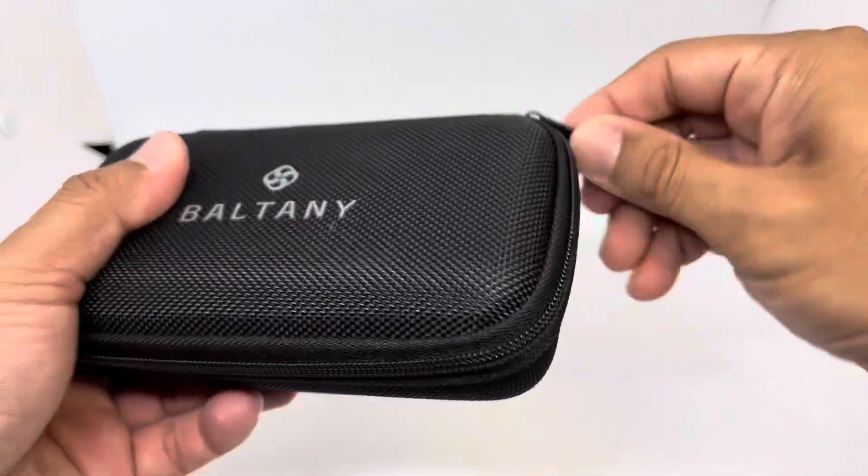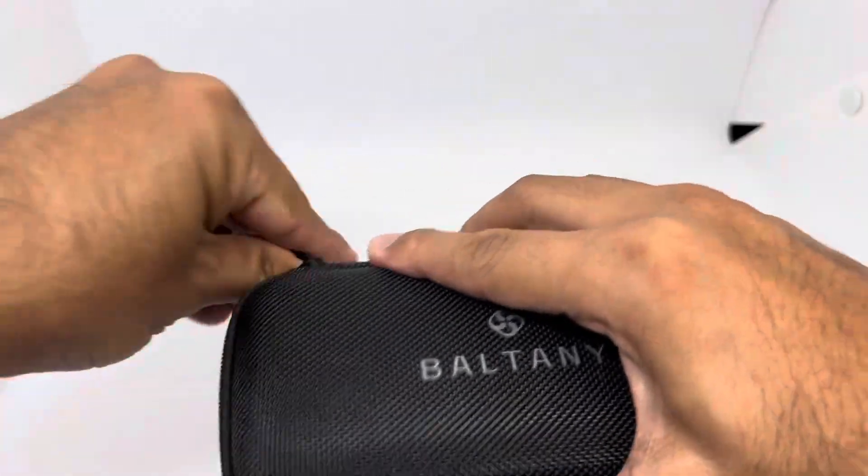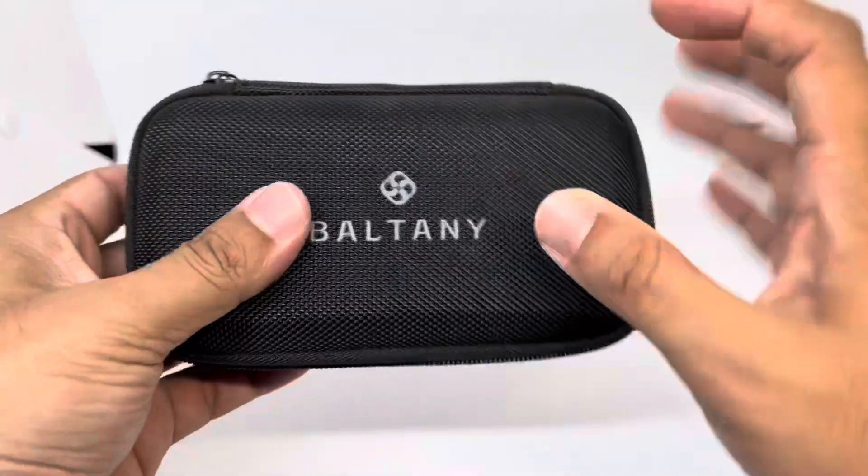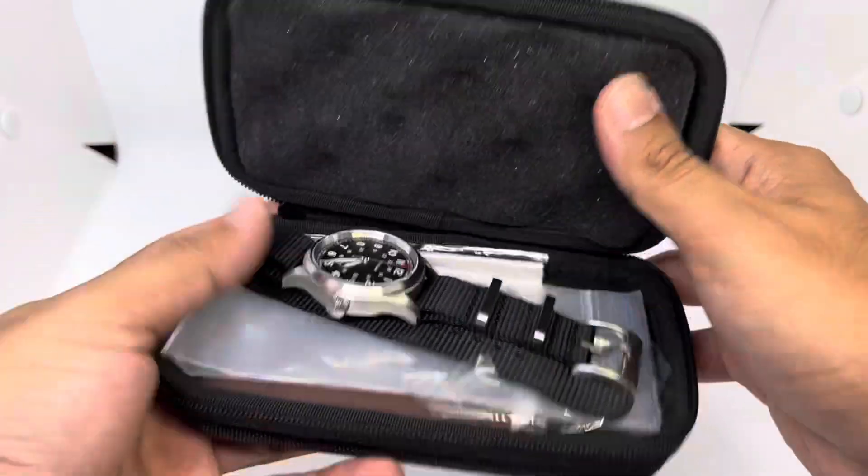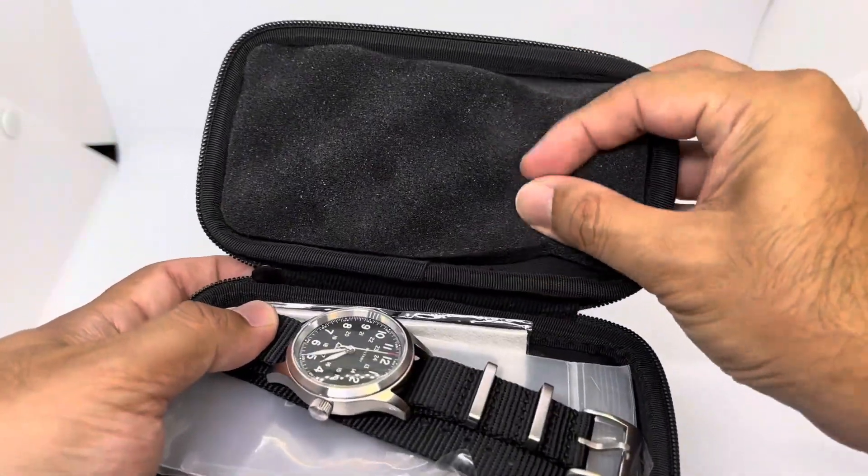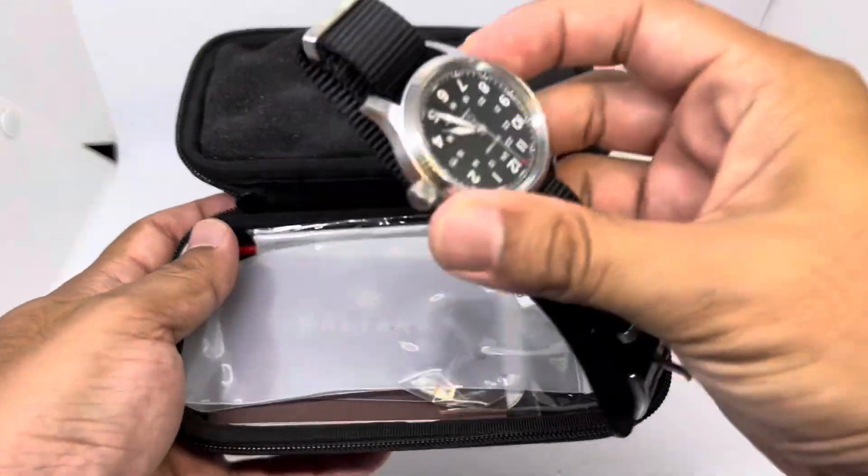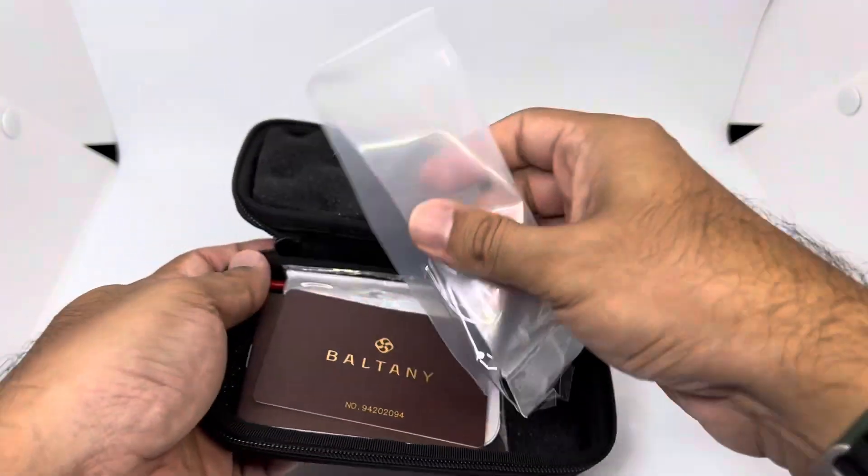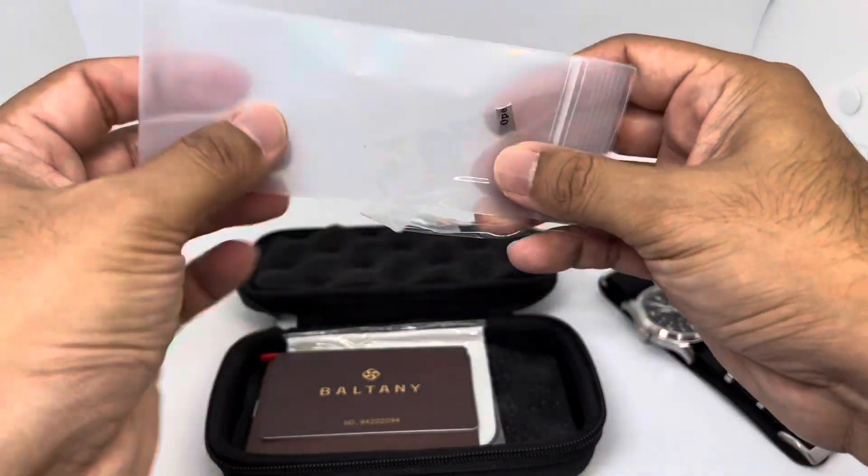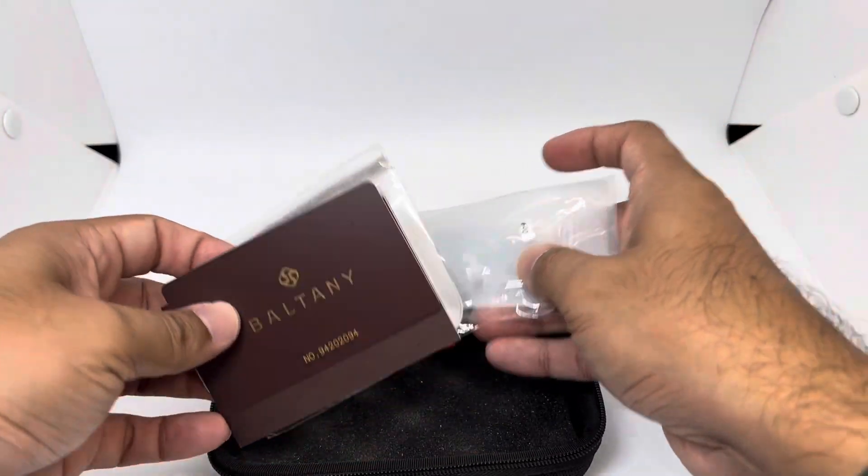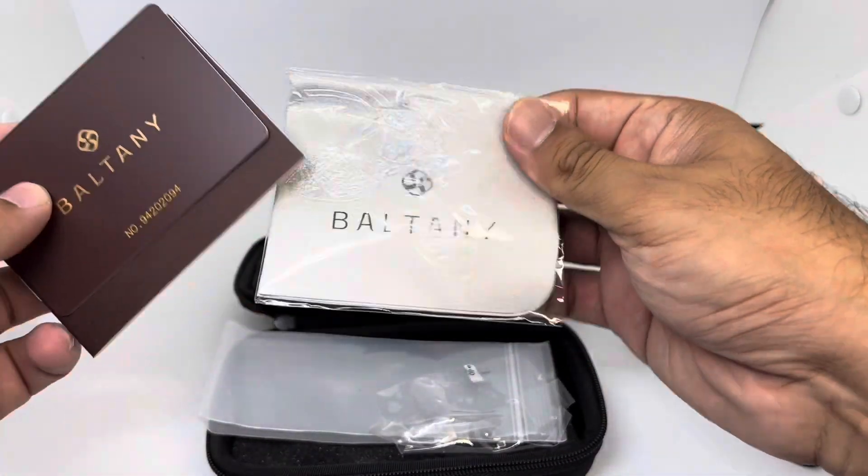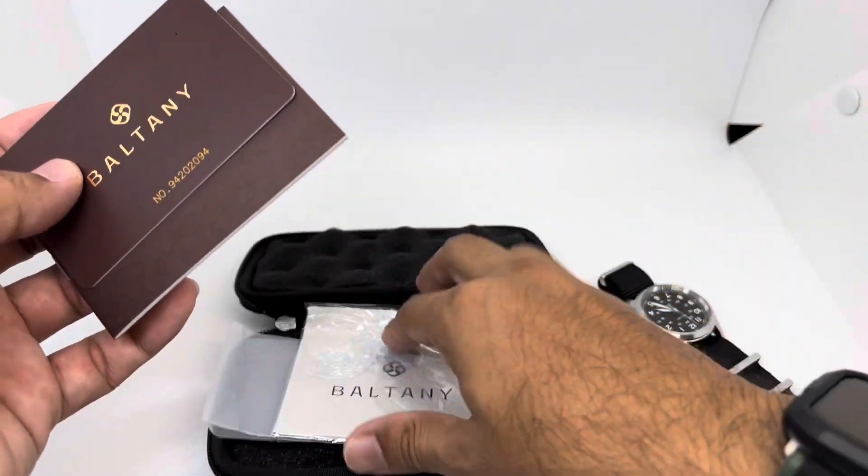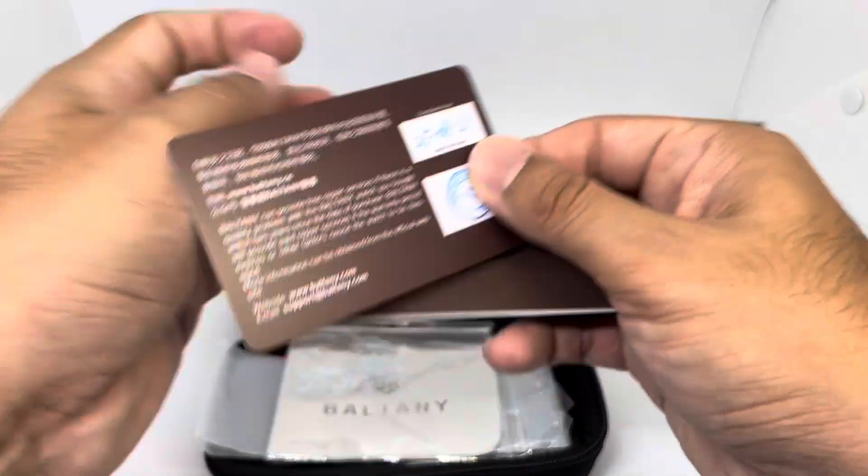Let's see what we have here. Your usual Baltany box. It came in this fluffy thing. This is the watch. What do we have inside? It came wrapped in plastic and Baltany gave us this polishing cloth which I have never used.